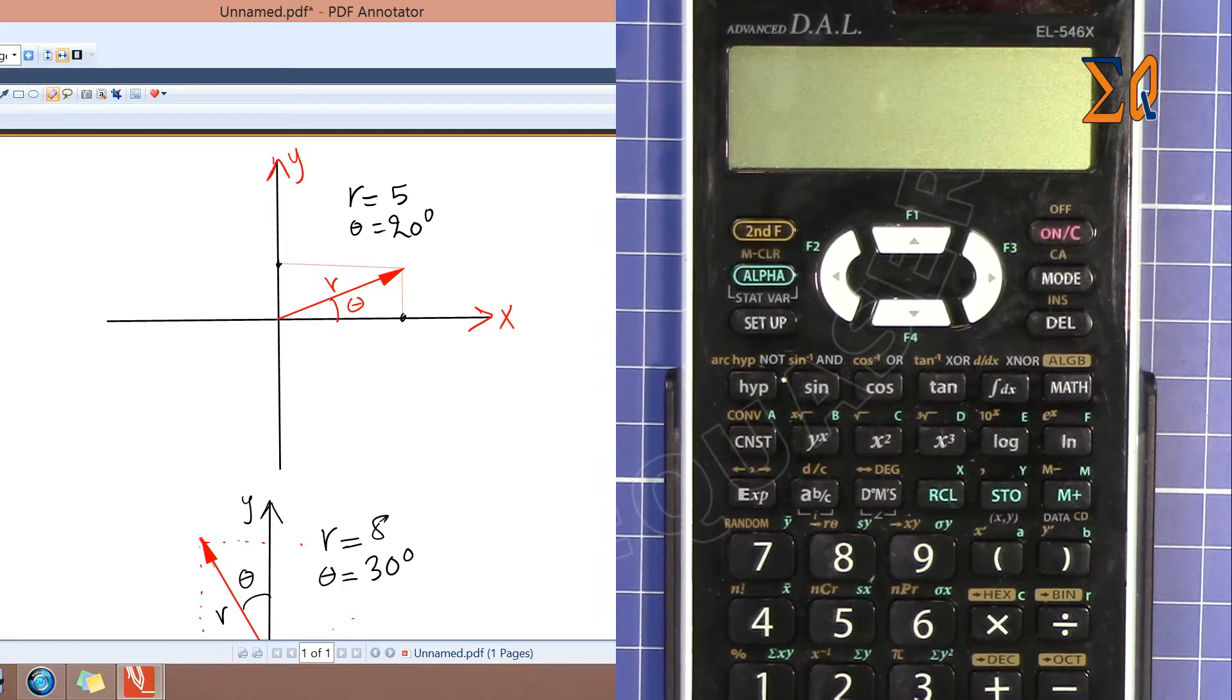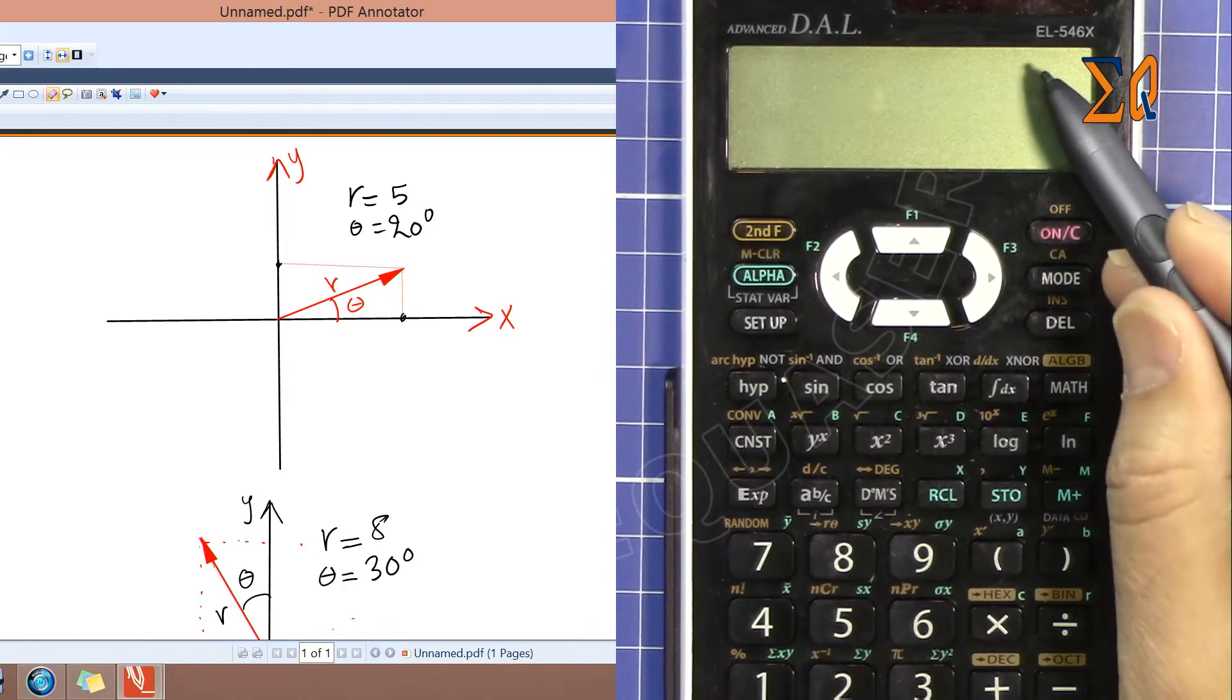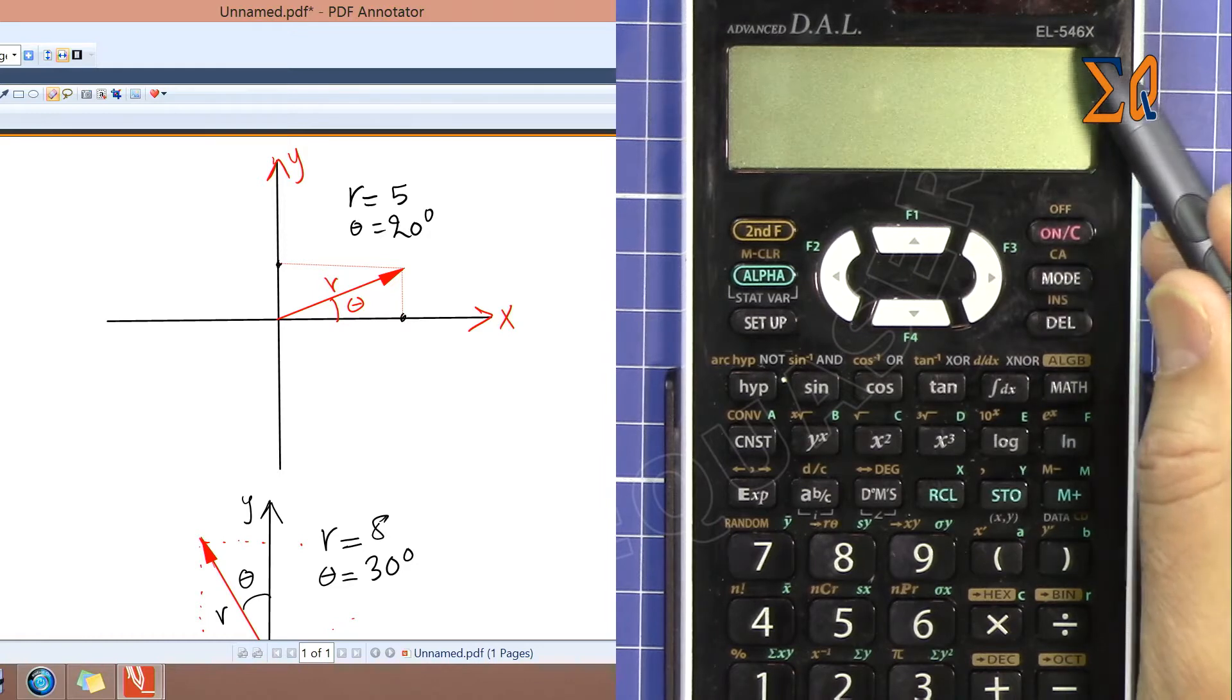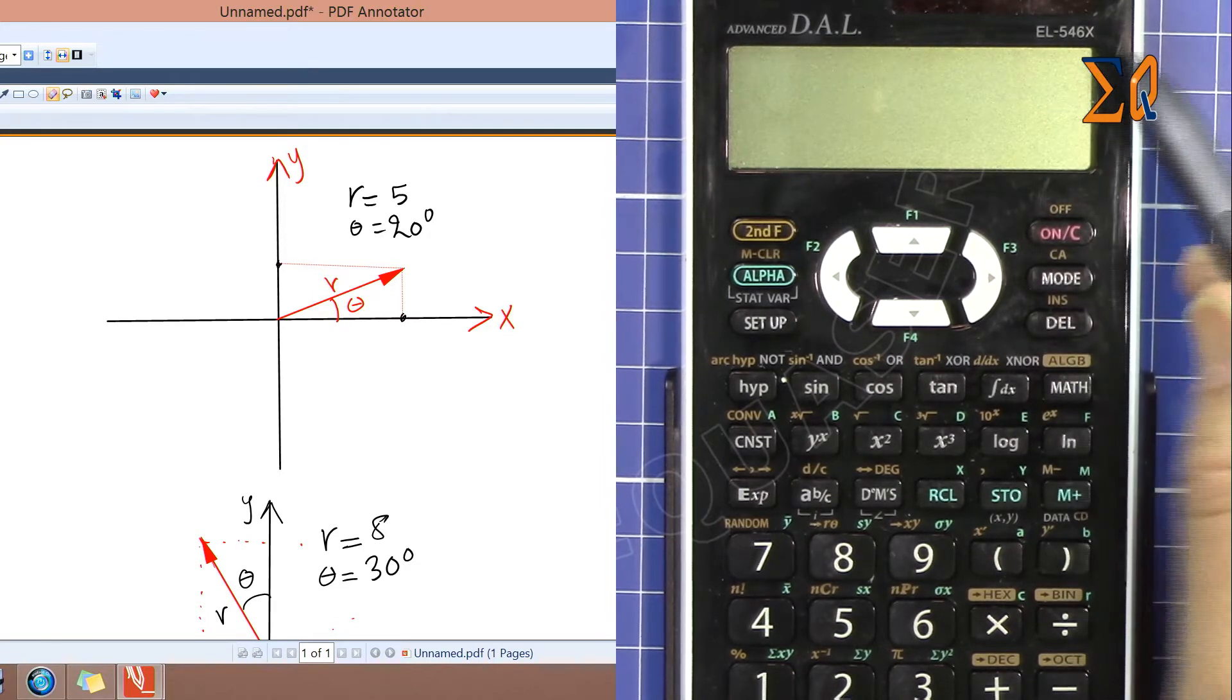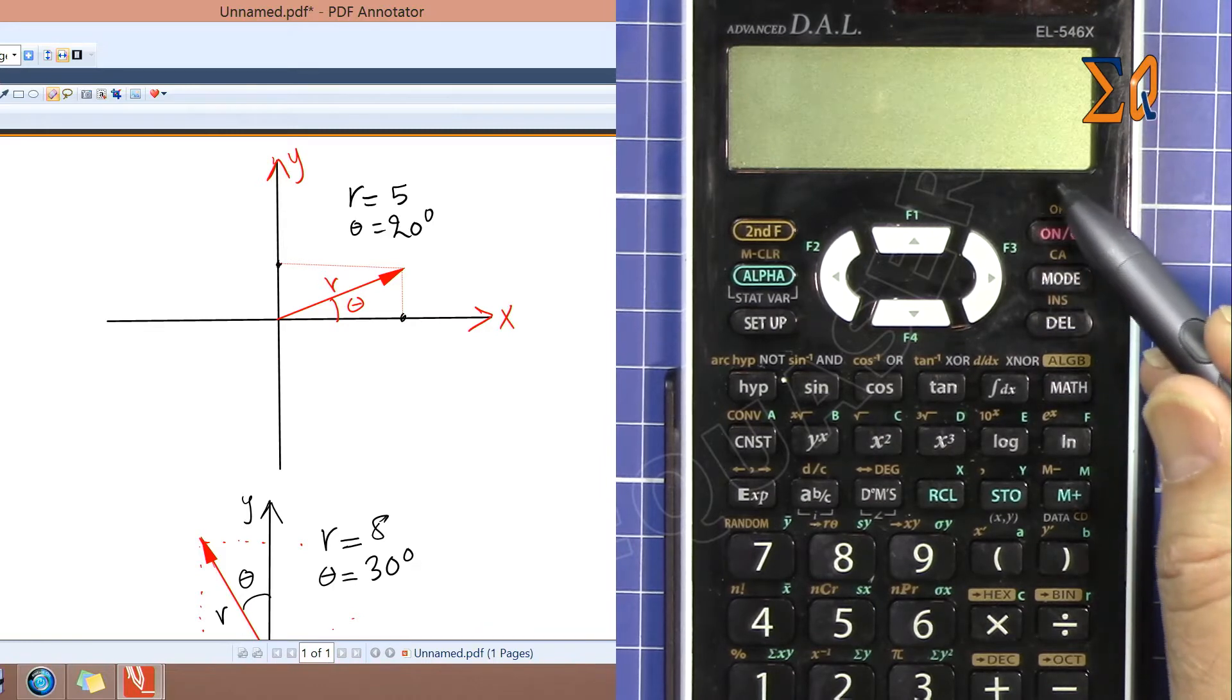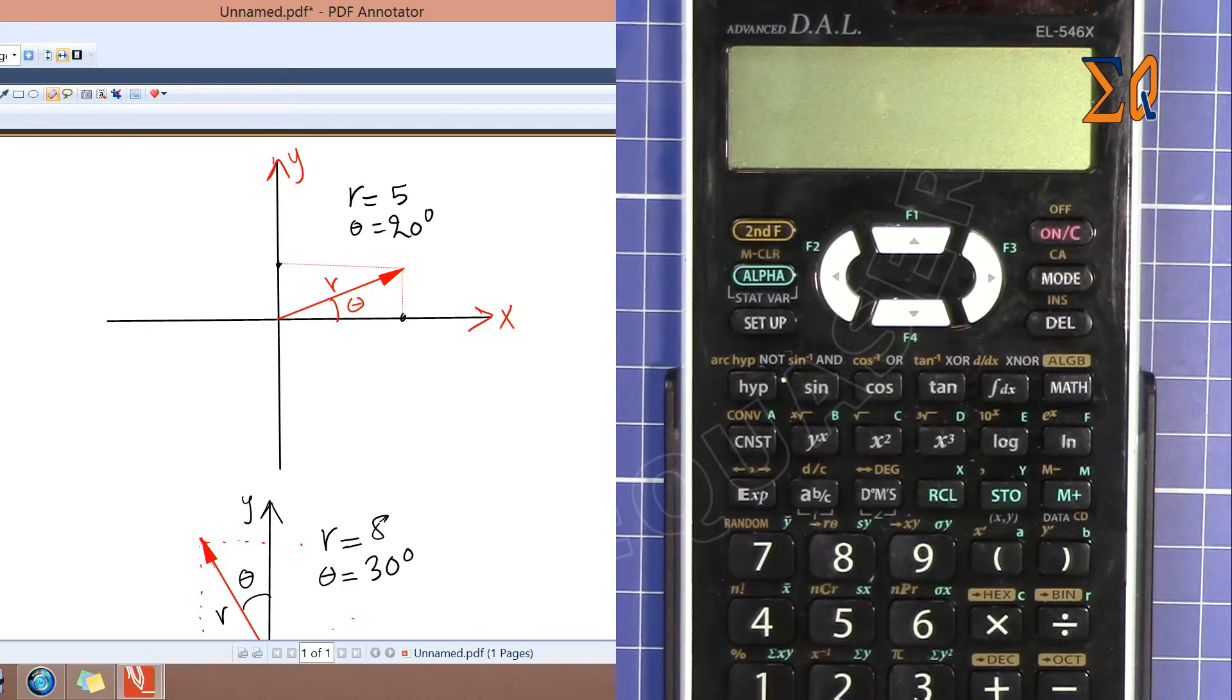Hi, welcome to Equasor. In this video I'm going to use Sharp EL546X and EL506X calculators—both are the same—to do the conversion of polar to rectangle. Rectangle is also called Cartesian in some schools.